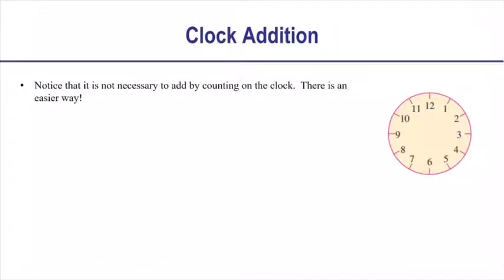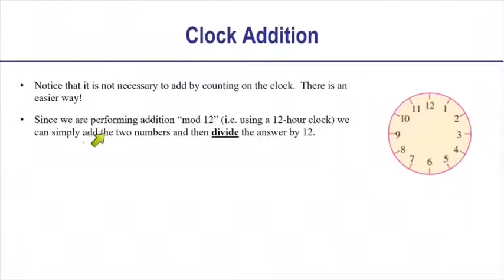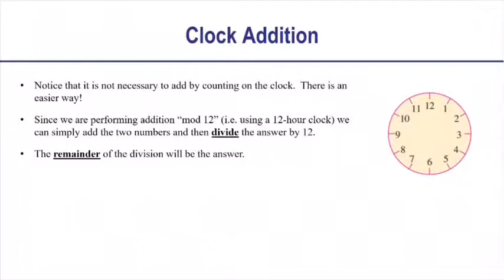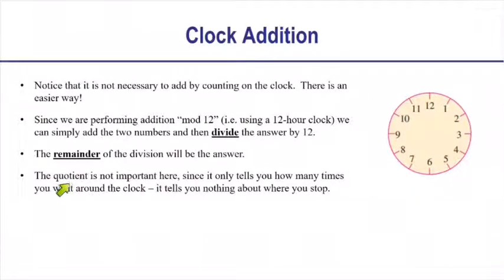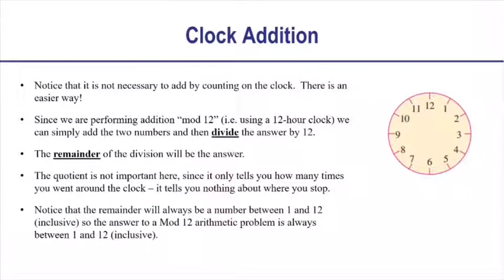You can imagine that if we had to do all clock addition by counting on the clock face, things could get really tedious. There is an easier way: since we're performing addition mod 12, all we have to do is add our two numbers with a regular plus sign and then divide that answer by 12. The remainder of the division is what matters — the remainder is the answer. The quotient is not important because it only tells you how many times you went all the way around the clock. Since we're dividing by 12, the remainder is always between 1 and 12 inclusive.